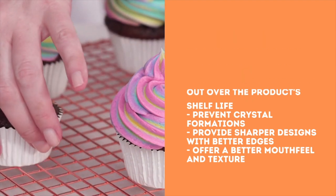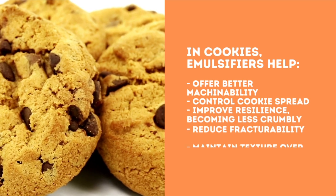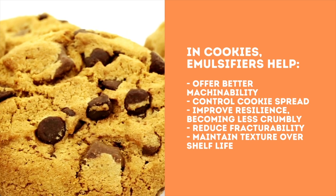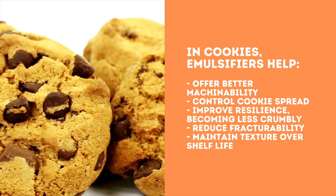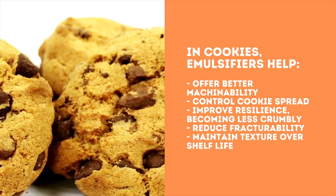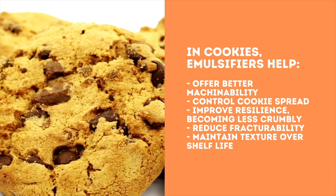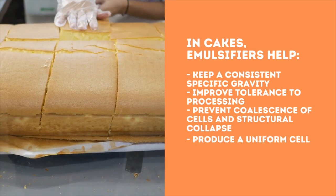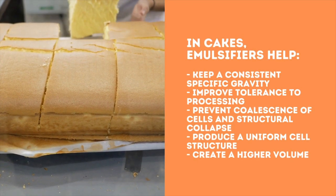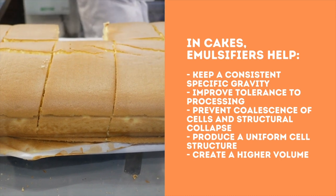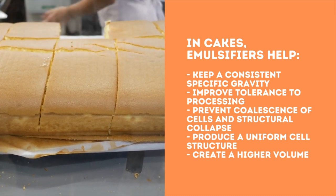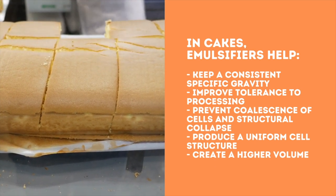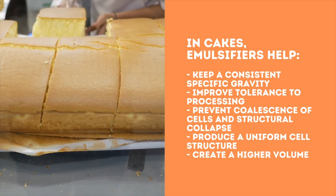In cookies, emulsifiers help offer better machinability, control cookie spread, improve resilience by becoming less crumbly, reduce fracturability, and maintain texture over shelf life. In cakes, emulsifiers help keep a consistent specific gravity, improve tolerance to processing, prevent coalescence of cells and structural collapse, produce a uniform cell structure, and create a higher volume.